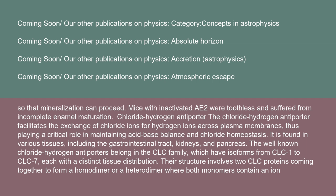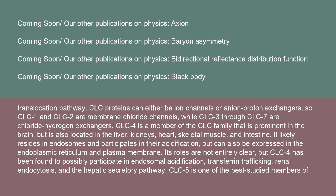The chloride-hydrogen antiporter facilitates the exchange of chloride ions for hydrogen ions across plasma membranes, playing a critical role in maintaining acid-base balance and chloride homeostasis. Found in various tissues including the gastrointestinal tract, kidneys, and pancreas, the well-known chloride-hydrogen antiporters belong to the CLC family, with isoforms CLC-1 through CLC-7, each with distinct tissue distribution. Their structure involves two CLC proteins forming a homodimer or heterodimer, where both monomers contain an ion translocation pathway. CLC-1 and CLC-2 are membrane chloride channels, while CLC-3 through CLC-7 are chloride-hydrogen exchangers.